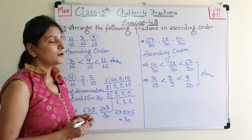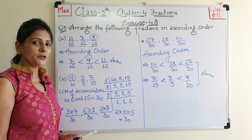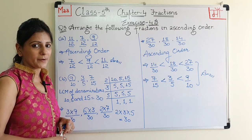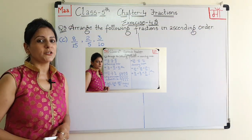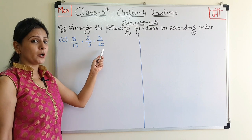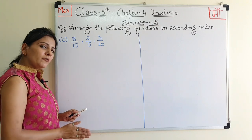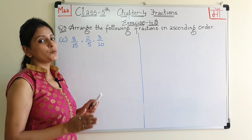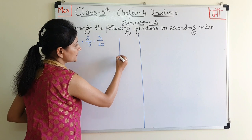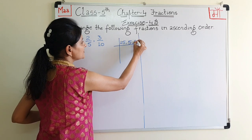Now let's move on to part C. Pay attention — part C has fractions 8 upon 15, 2 upon 5, and 3 upon 10. Again the denominators are different: 15, 5, and 10. Whenever denominators are different, the first step is to make them the same, and we do that by taking the LCM of the denominators.